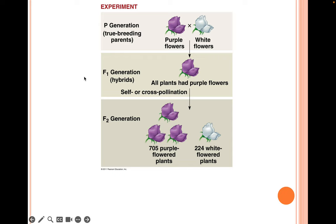Consider this experiment which Mendel conducted. We have a parental generation of true breeding plants. Every time you breed purple to purple flowers, all the offspring also have purple flowers. For the white-flowered parents, they're also true breeding — white crossed with white always produces white-flowered pea plants. If we cross these two true breeding parents, a purple flower with a white flower, we'd end up with our F1 hybrids — the first filial generation. All plants in this F1 generation had purple flowers.